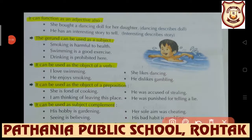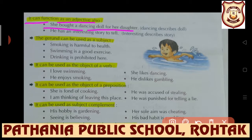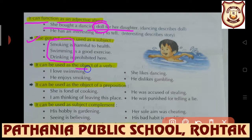The gerund can function as an adjective - if it is describing a noun, it is used as an adjective. 'She bought a dancing doll for her daughter' - the doll has been described, so it is used as an adjective. The gerund can be used as a subject - in the beginning of a sentence. It can also be used as the object of a verb: 'I love swimming', 'He enjoys smoking.'